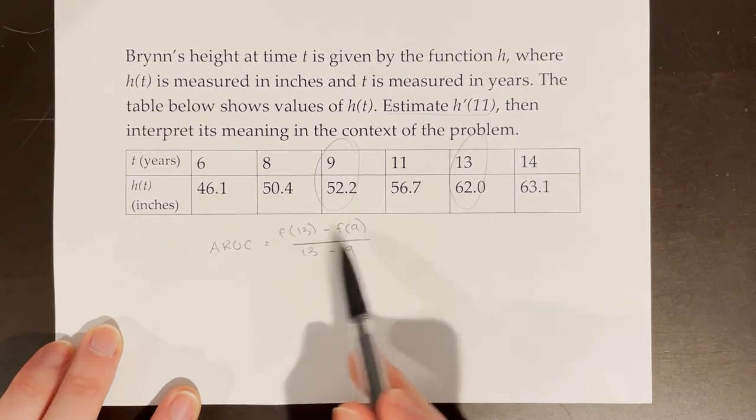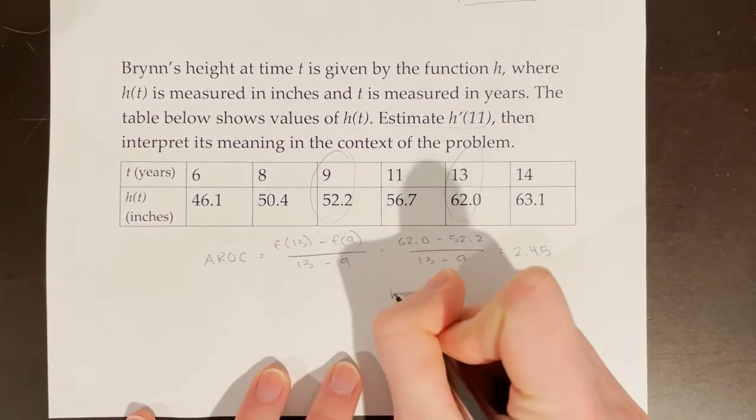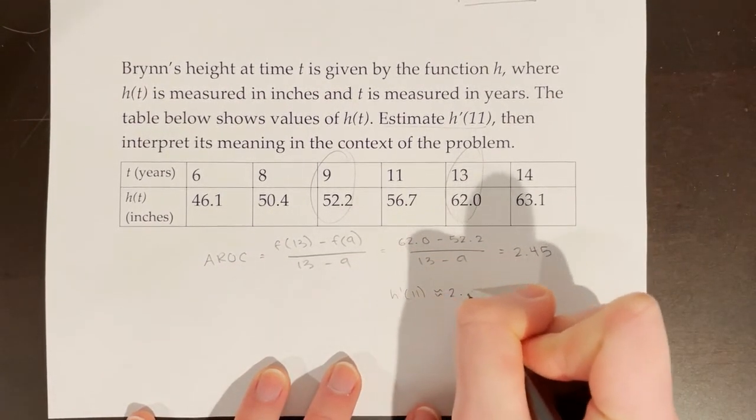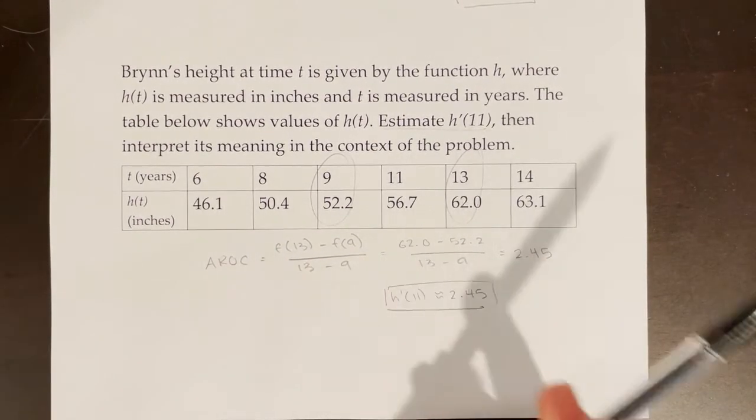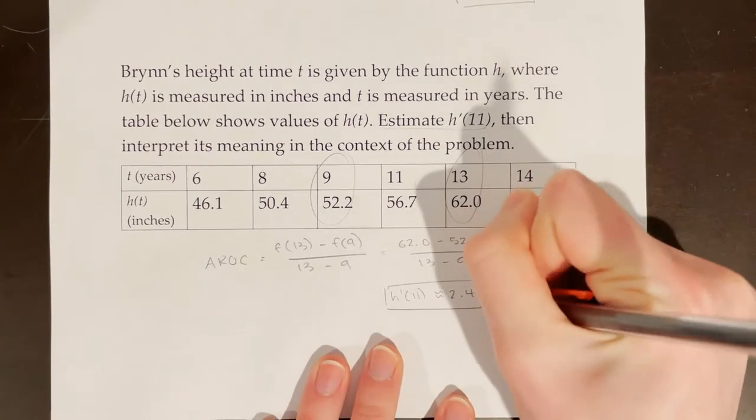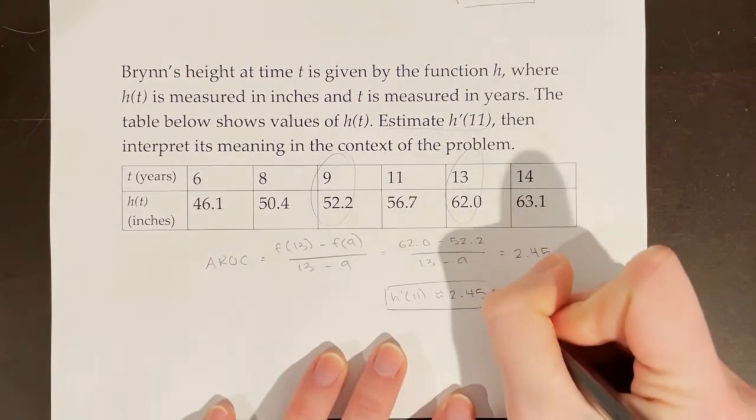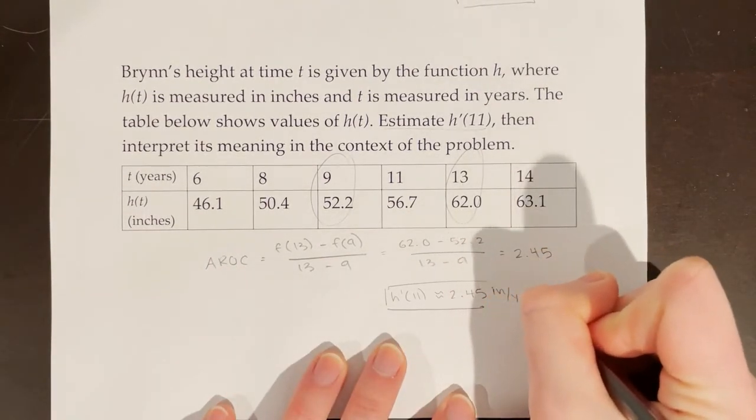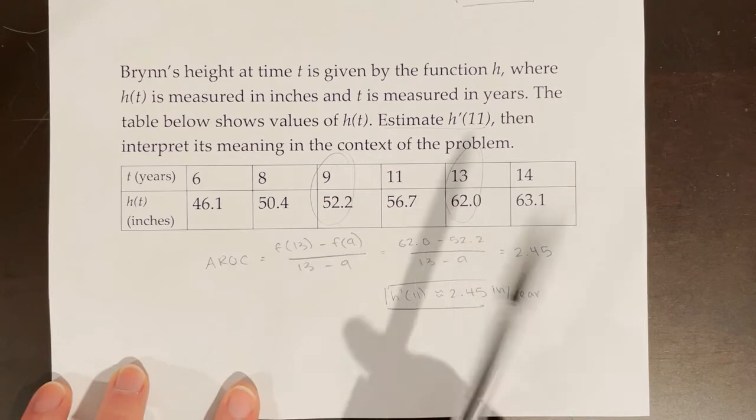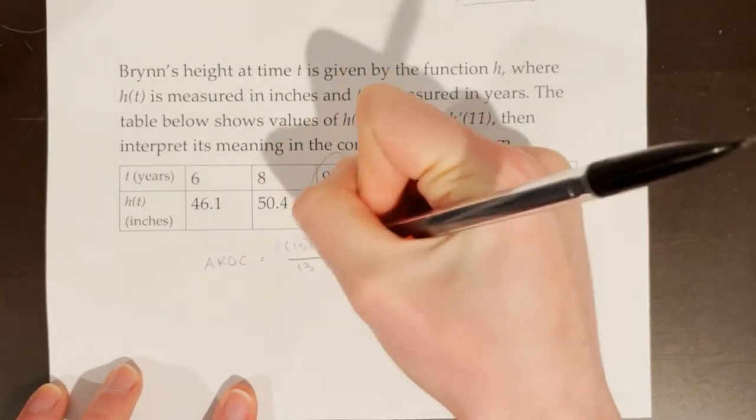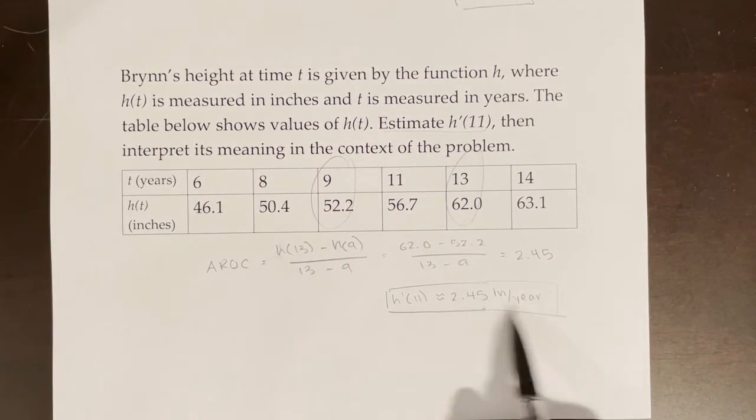Now I'll plug in my numbers for f of 13 and f of 9. And I get that h prime of 11 is approximately 2.45. I also need to interpret the meaning in the context of the problem. And part of that means that I need to include units here. So it's not just 2.45, it's going to be 2.45 inches per year. Because when I was plugging it into the average rate of change formula, I was talking about h of t over t. And this should really be h of t, not f of t, because h is the function here.